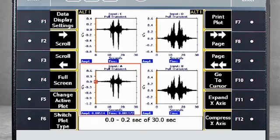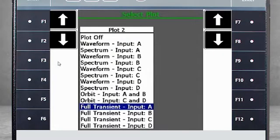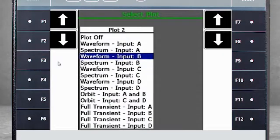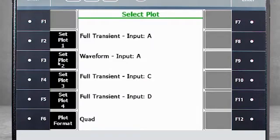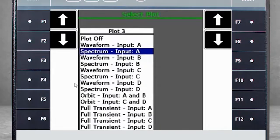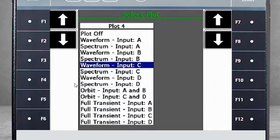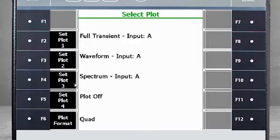For plots, I want plot 1 to remain full transient. For plot 2, I selected the waveform from input A. Plot 3, I will choose the spectrum for input A. I will disable plot 4 for now, and then place the data in a stacked format.